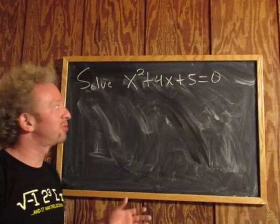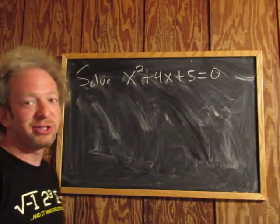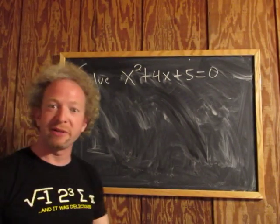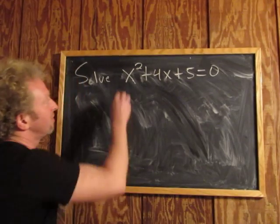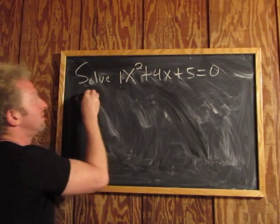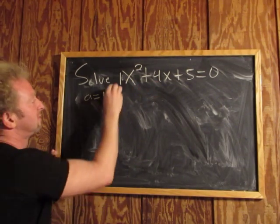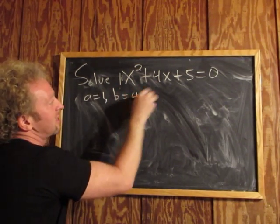So in this video, we're going to solve this equation using the quadratic formula. So the first thing you might do when you're using the quadratic formula is find a, b, and c. So a here will be 1, so a is equal to 1, b is equal to 4, and c is equal to 5.